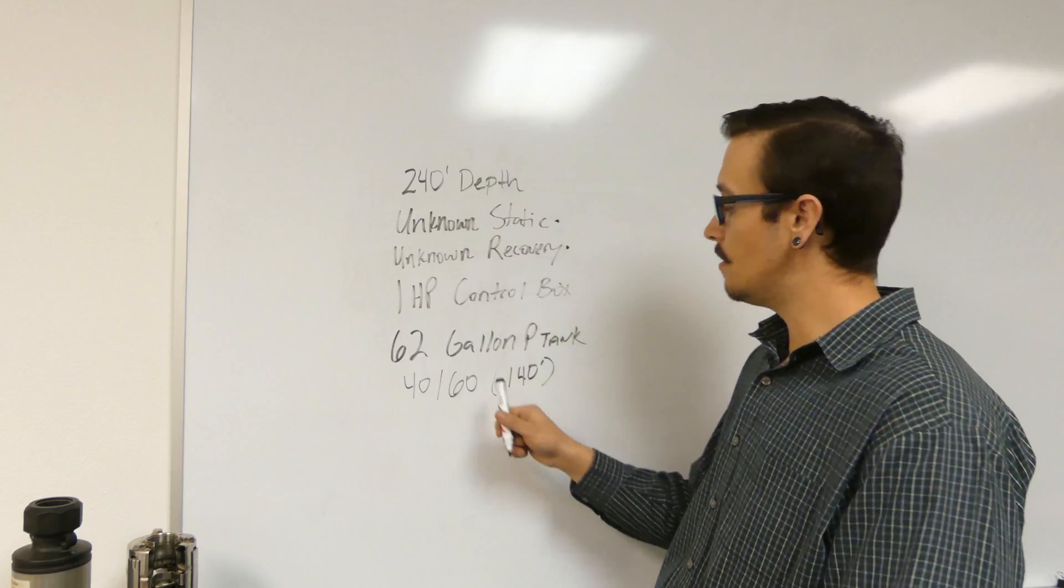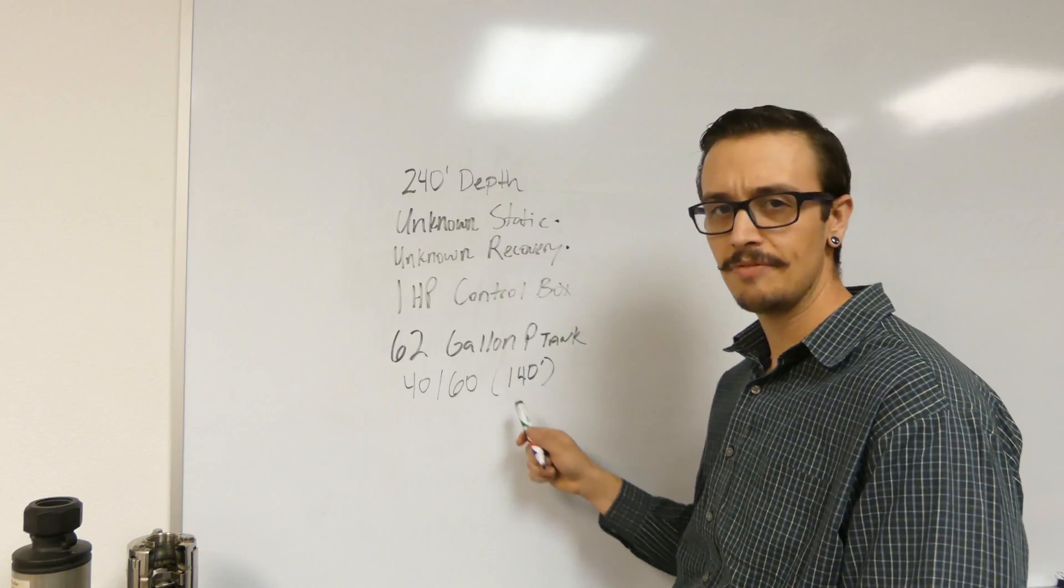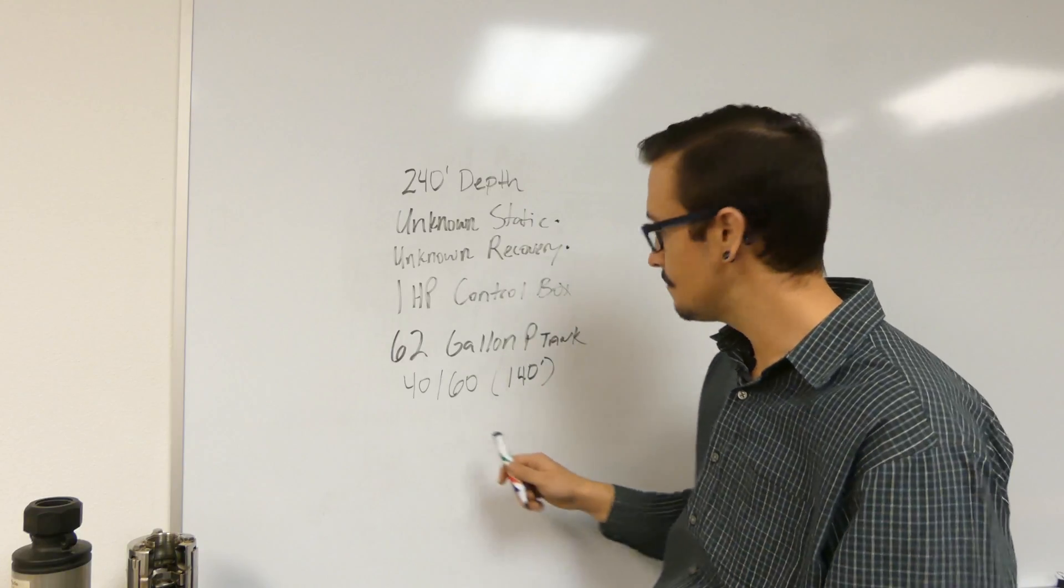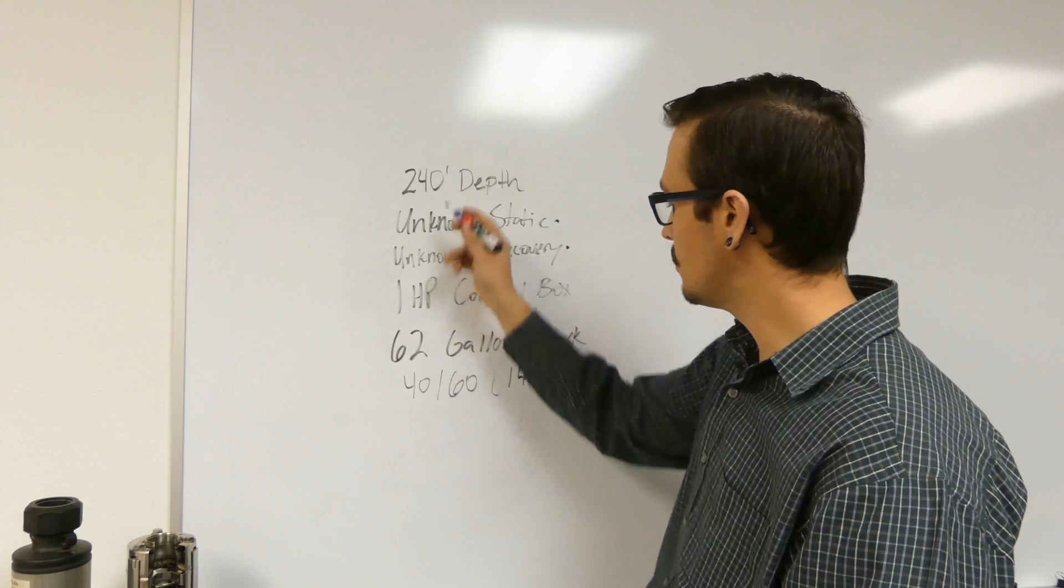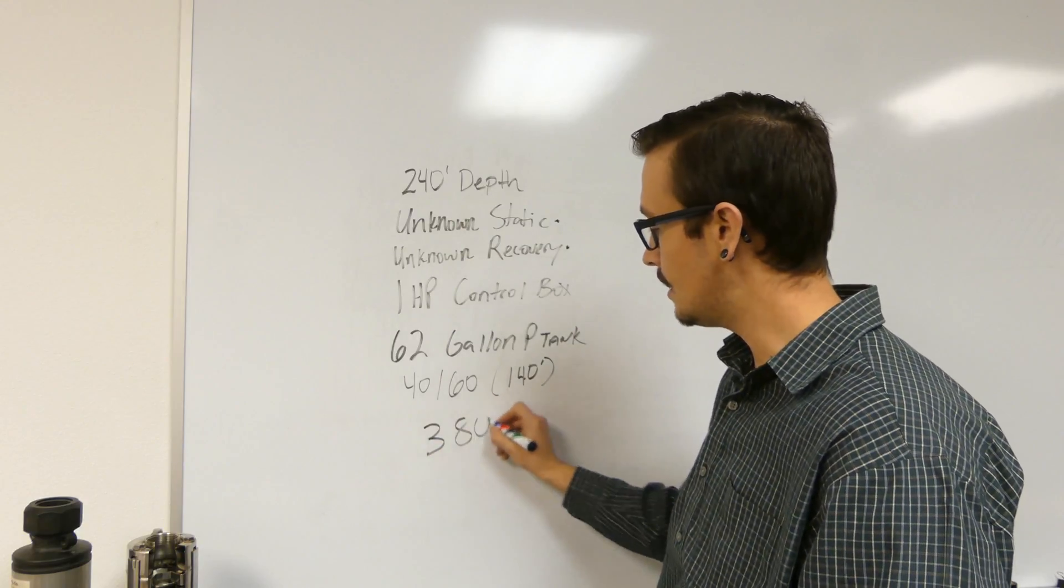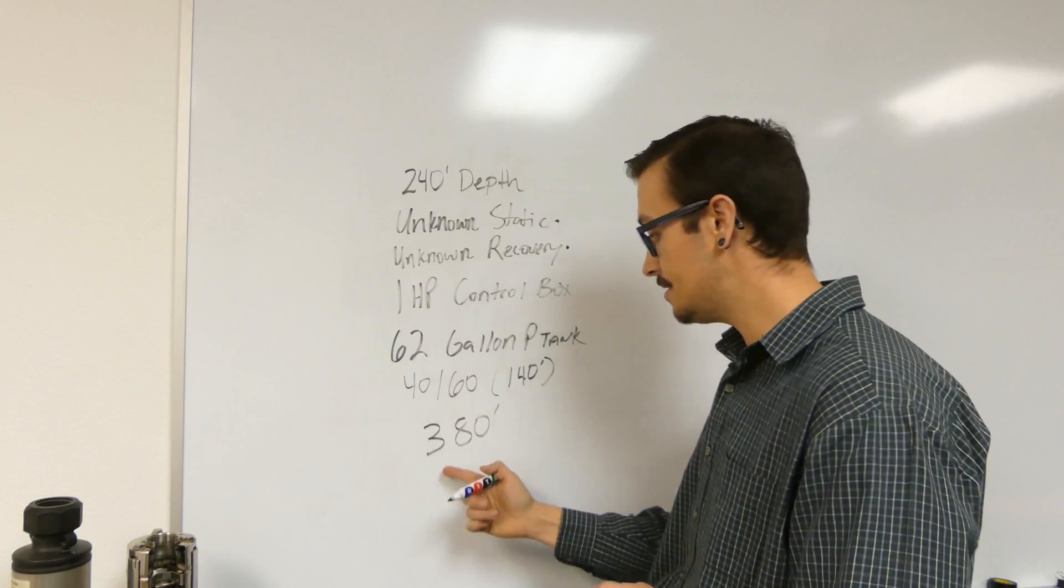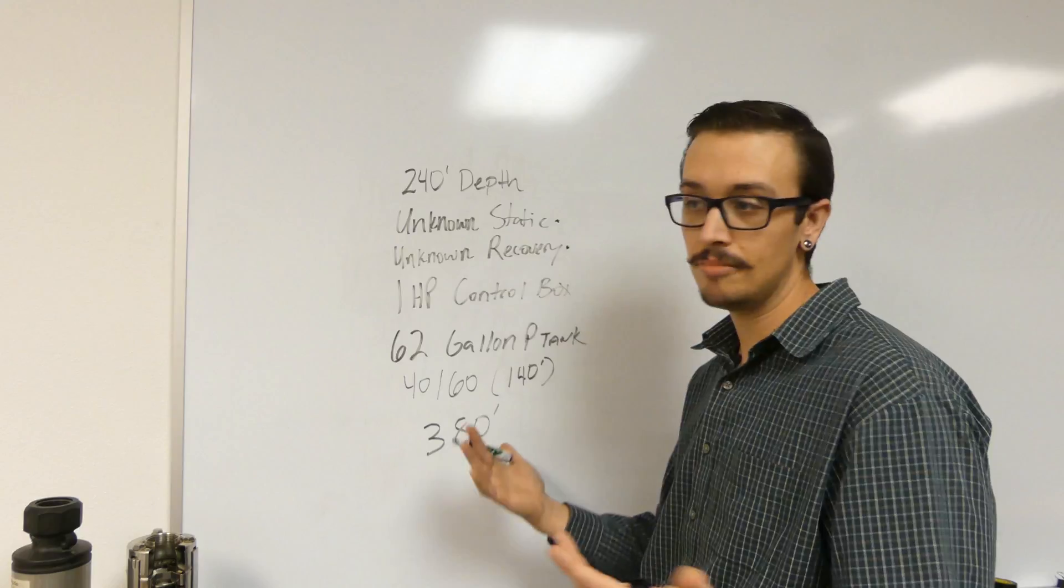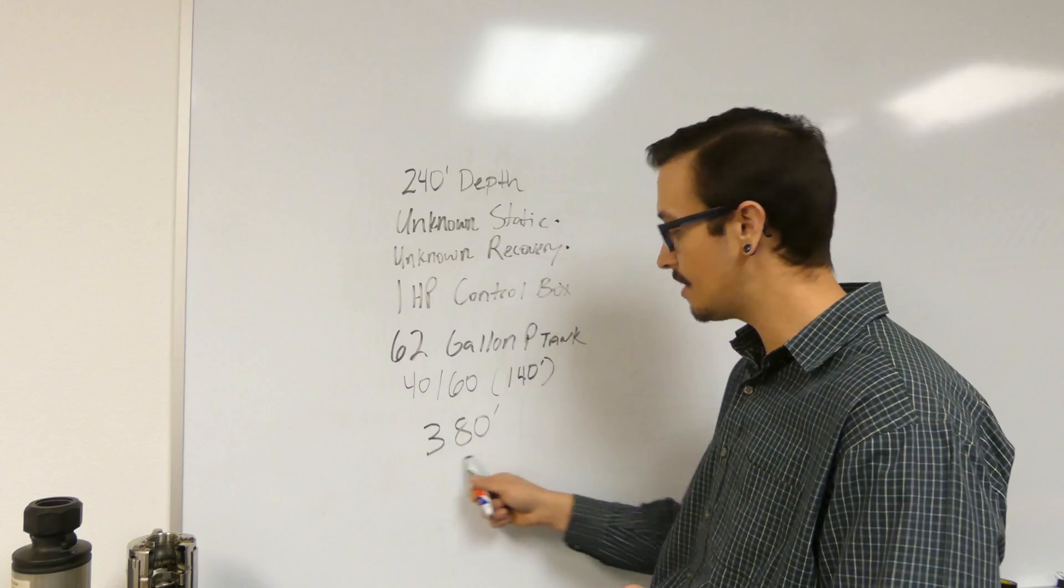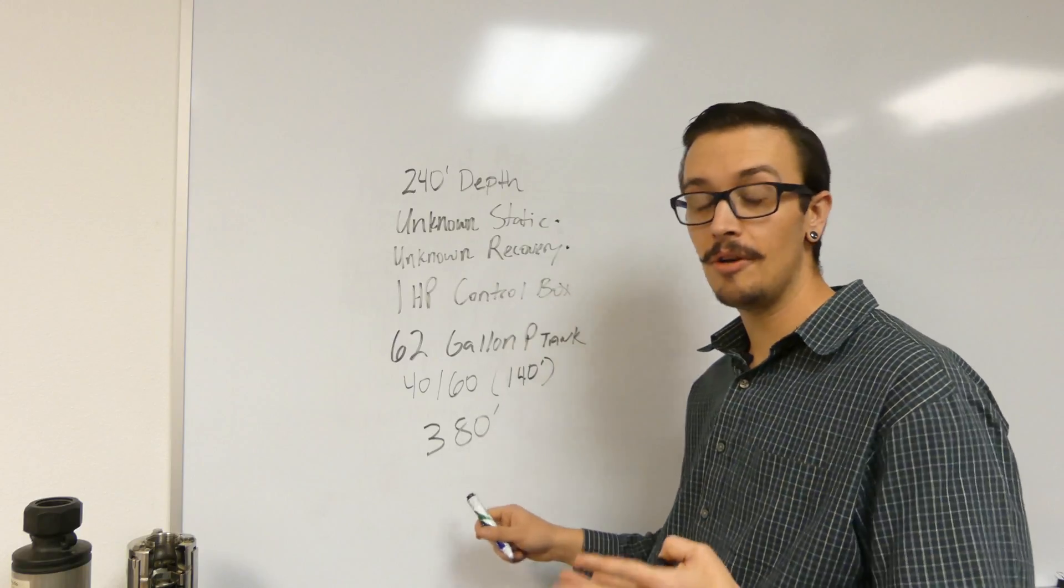Okay, so we've got 240 plus 140, and of course that factors for just a tiny bit of friction loss. So we total those up together, we're at 380. So that's pretty good. Now we've got at least our TDH or an example TDH figured out.